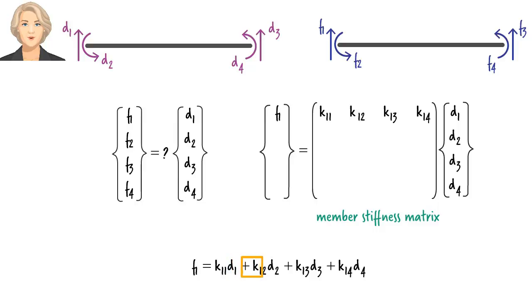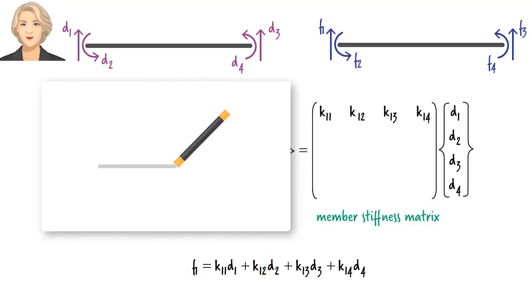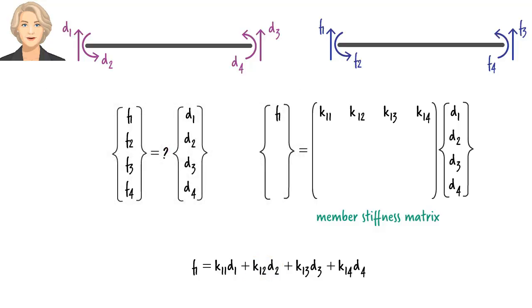Similarly, K12 is the stiffness coefficient for pair F1, D2. If we give the beam a displacement in direction 2, then a force of K12 times D2 develops in direction 1. So, the total force in direction 1, which we labeled F1, is the sum of the forces in direction 1 caused by each of the four displacements.